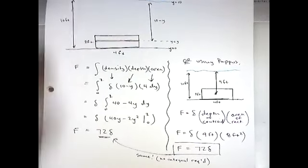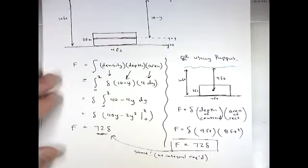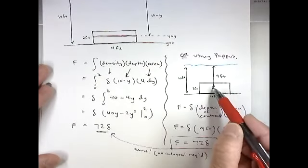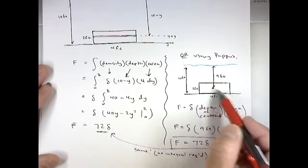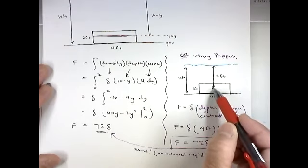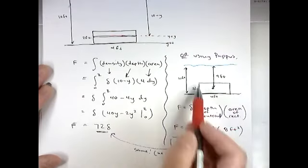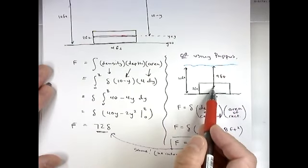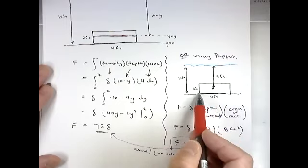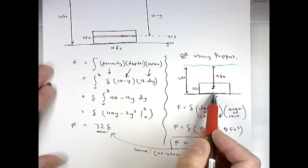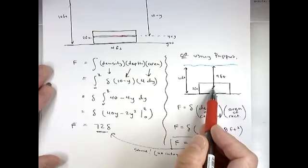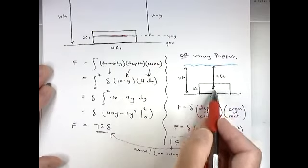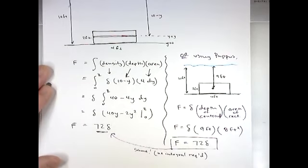Now, how would Pappus have viewed this problem? Pappus would have thought about it this way: all of the area of this plate can be thought of as acting at the centroid. And for a rectangle, if it's 4 feet by 2 feet, where would the centroid be? It'd be right in the middle. We don't really need x̄, but it'd be 2 feet over and 1 foot up. It'd be right in the middle, which means the centroid would be 9 feet from the surface of the water.